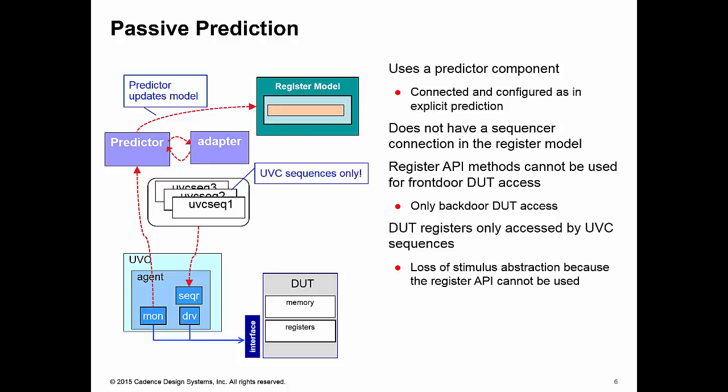And the connection between your register model and your UVC sequencer is very simple. It's just one line of code. So because of this, because of the simplicity in using explicit prediction and because of the loss of abstraction that you get in passive prediction, then you find this mode is rarely used.